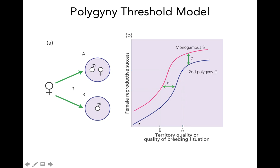There should be costs involved with being the second female rather than being the only female — you're going to get less resources, less parental care from a male, whatever it might be. This model incorporates that by making the fitness payoff for being the first female with a male as a function of his territory quality — that line is always above the fitness payoff of being the second female at a territory. So if you're the second female arriving and mating with a male, you're going to have lower fitness than if you were to get there first.